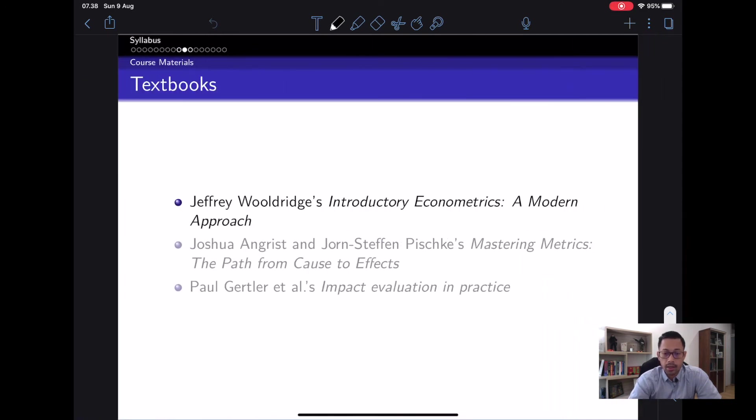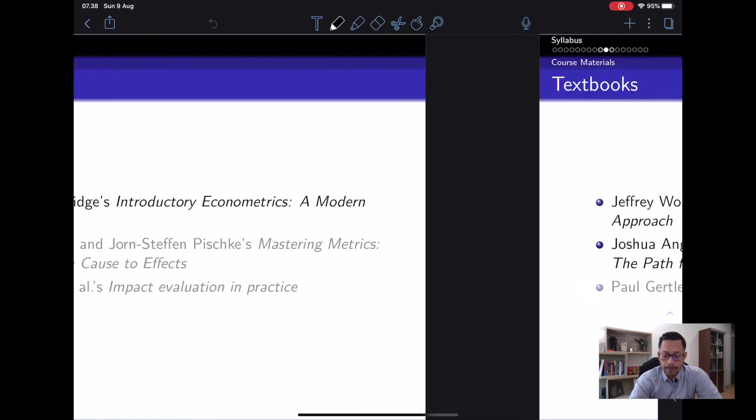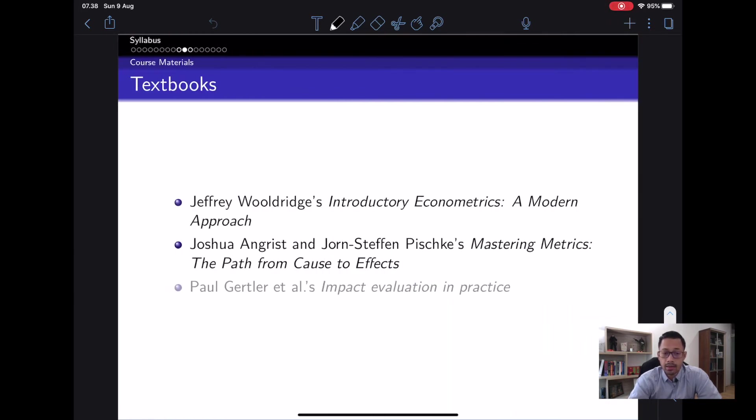Let's go through some of the course materials we're going to use throughout the semester. For basic introductory econometrics textbook, I think Jeffrey Wooldridge is the best that I can think of. Another exciting and relatively light econometrics book is Mastering Metrics: The Path from Cause to Effects by Joshua Angrist and Jorn-Steffen Pischke.